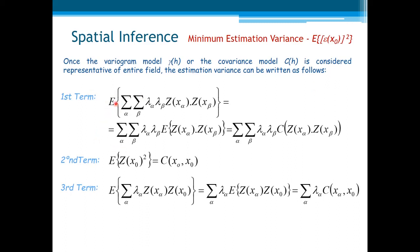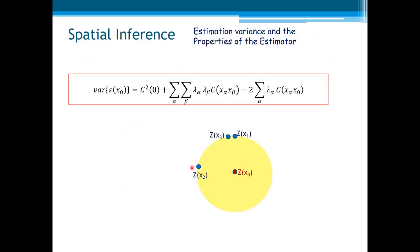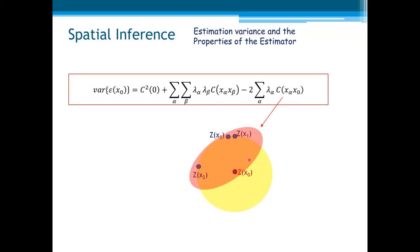The first term, with the expectation operator coming inside the double sum, gives us the covariance between the sample values zx alpha and zx beta. The third term is a linear combination of the covariance between the sample and the point to be estimated. The second term is the covariance between the point and the point itself. We arrive at the final expression of the variance, which is dependent on the covariance between samples and inversely dependent on the covariance between samples and the point to be estimated.